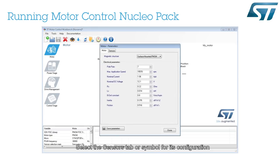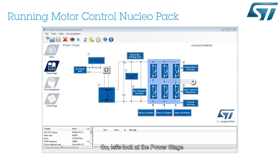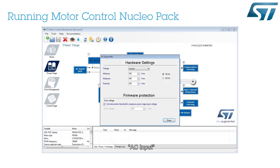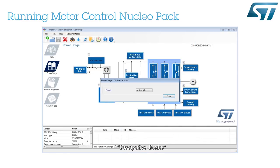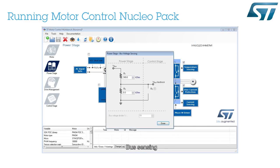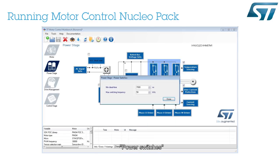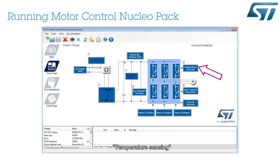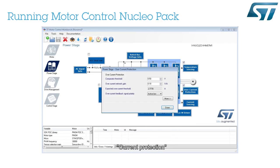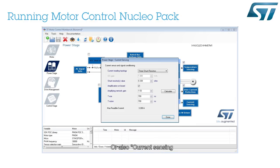Select the sensors tab or symbol for its configuration. Let's look at the power stage. Various settings are available, such as AC input, inrush current, power factor correction, bus voltage, dissipative brake, bus sensing, power switches, UV or W driver, temperature sensing, current protection, and current sensing.